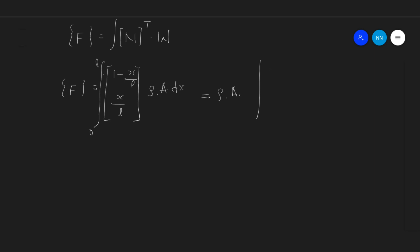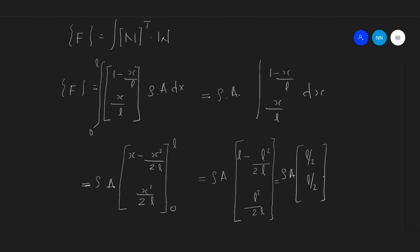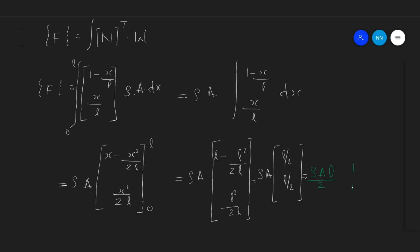Rho and A are constant. Integrating the term with respect to dx: the integral of (1 minus x by L) gives (x minus x squared by 2L), and (x squared by 2L) for the second term. Applying the limit from 0 to L, we get rho into A multiplied by [L minus L squared by 2L, L squared by 2L], which simplifies to rho into A multiplied by [L/2, L/2]. Taking L/2 as common gives rho*A*L/2 multiplied by [1, 1].